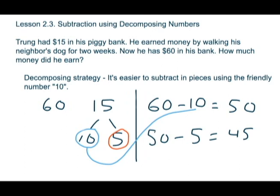So, we'll take the other portion of the 15, which is the 5, and from our 50, subtract 5, and we'll come up with our answer of $45, which is what he earned during the two weeks.